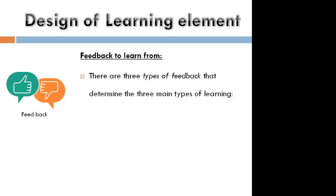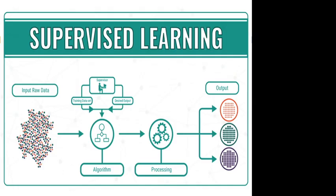Coming to feedback — how to learn. There are three types of feedback, and three types of learning. Coming to supervised learning feedback: the input is raw data. A supervisor provides a training dataset. Based on the desired output, we apply an algorithm and process the output. For example, red, green, blue colors are separated. We are using a training dataset — that is supervised learning.